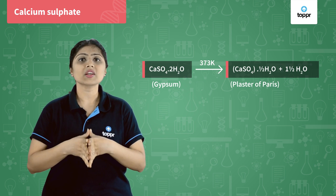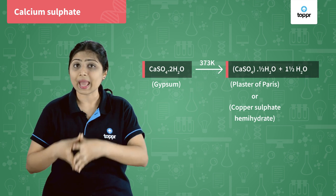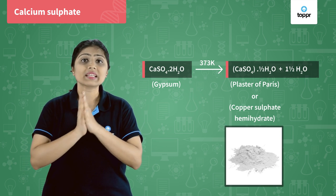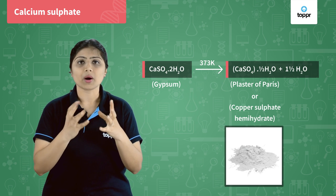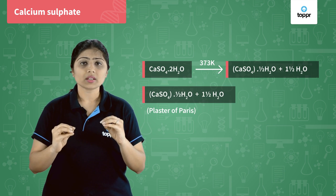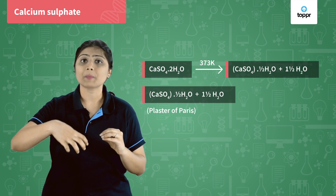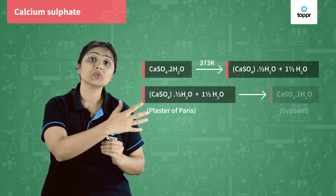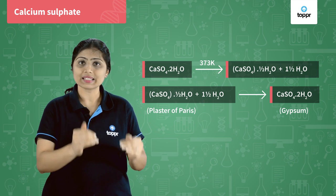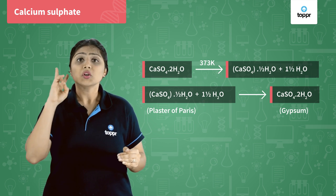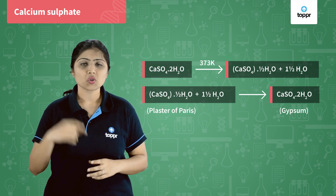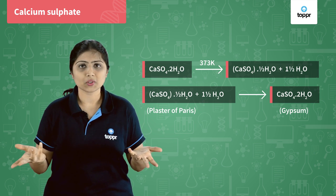In chemistry, we call plaster of Paris calcium sulphate hemihydrate. Calcium sulphate hemihydrate is a white powder — that is plaster of Paris. When we put some water in plaster of Paris, it will again convert to gypsum. The formula CaSO4·½H2O is written this way because two molecules of calcium sulphate are actually sharing one molecule of water, so one molecule will share half a molecule of water.